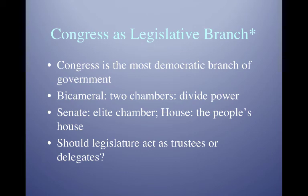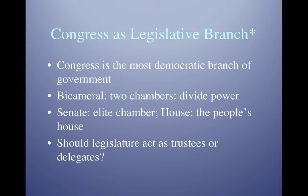Not only is Congress the most powerful branch of government, but it is also the most democratic branch. Congress is divided into two chambers: the Senate, which is the upper chamber, and the House, which is the lower chamber. The Senate is designed to be the more deliberative, elite body, whereas the House is designed to be more of the people's house. This division is evidence that the founders were concerned about centralized power — in order for a bill to become law, it has to pass both chambers instead of just one, which is the case in most parliamentary systems.